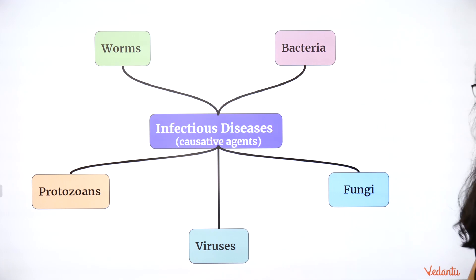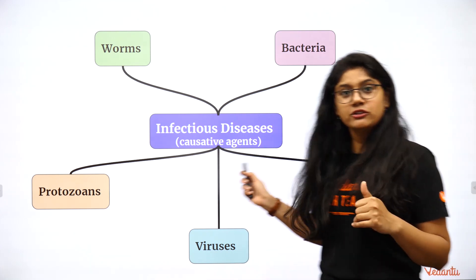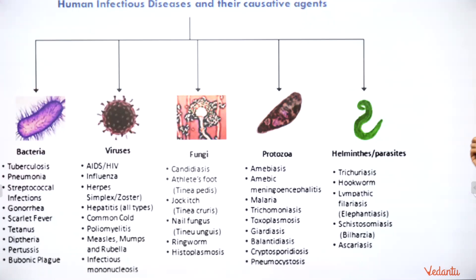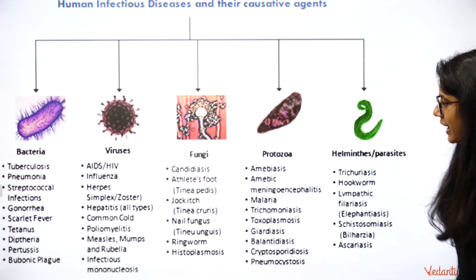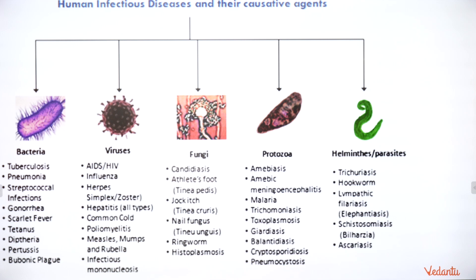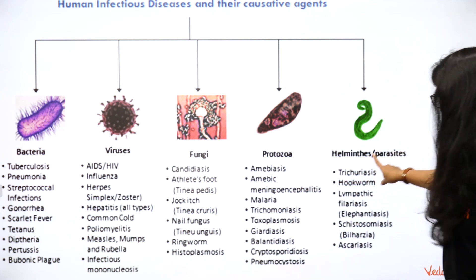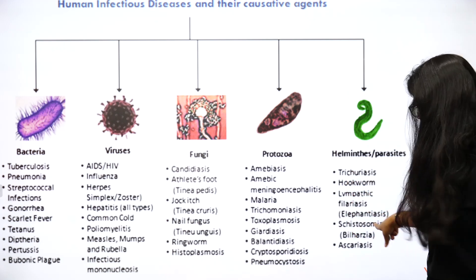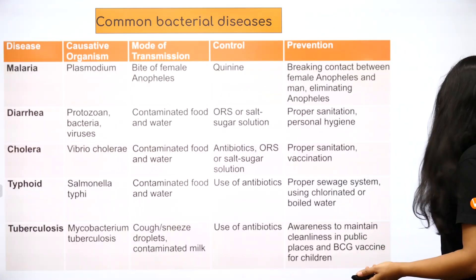There are a variety of infectious agents that cause diseases: worms, bacteria, fungi, virus, and protozoa. Here is a table of human diseases they cause — please take a screenshot. Bacteria cause tuberculosis, pneumonia, and tetanus. Viruses cause AIDS/HIV, influenza, herpes, polio, common cold, measles, and chicken pox. Fungi cause athlete's foot and ringworm. Protozoa cause amoebiasis and malaria. Parasites cause hookworm and filariasis — the disease causing elephantiasis.